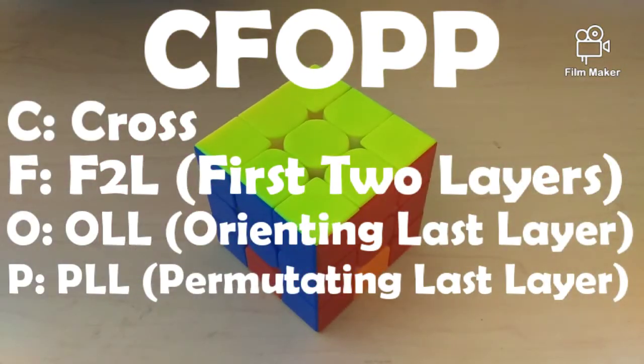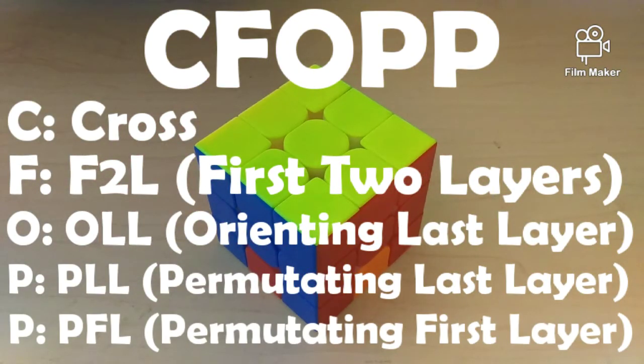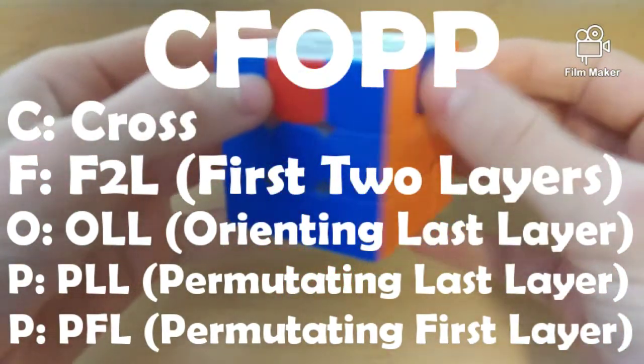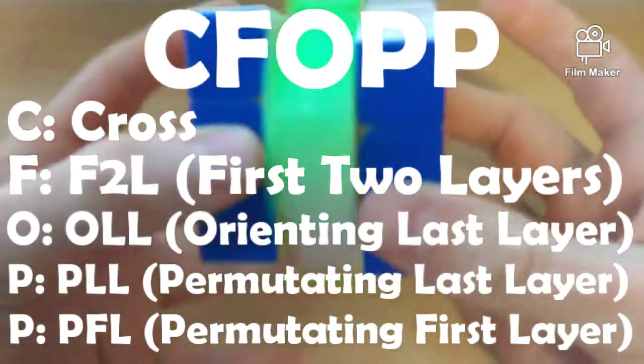And finally, unlike CFOP, we have another P, which stands for PFL, or permutating the first layer. And basically, in this step, we are just fixing the cross that we did wrong in the very beginning, with one simple algorithm.